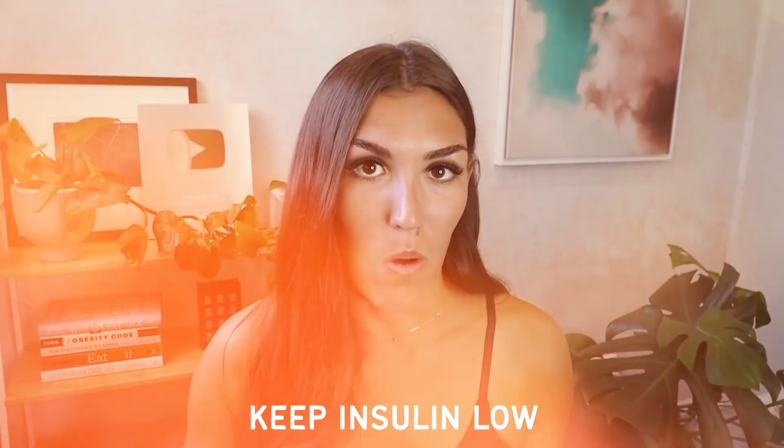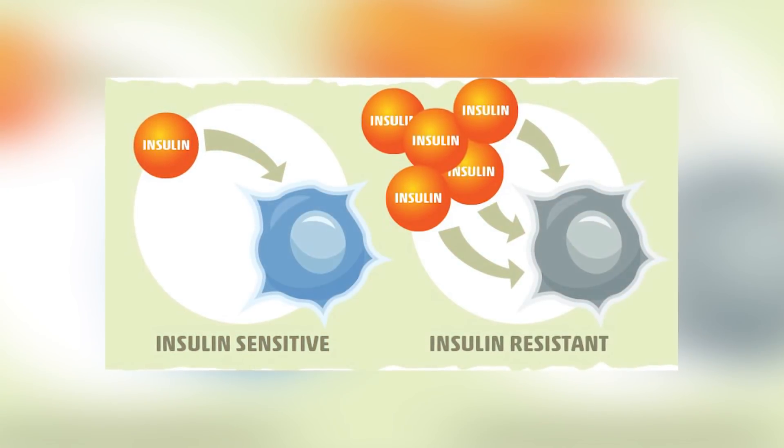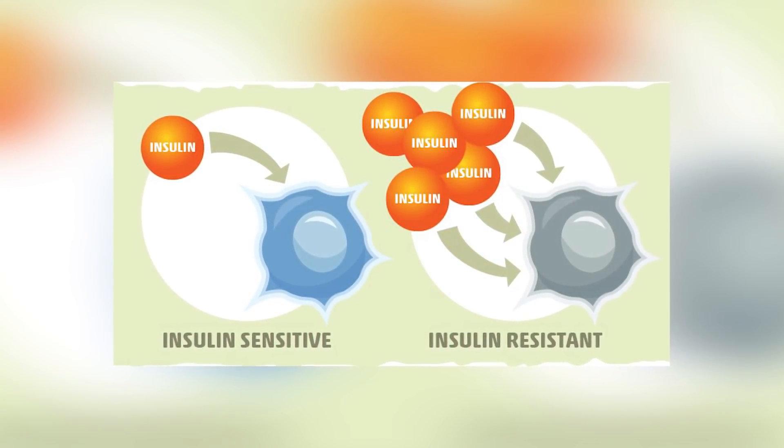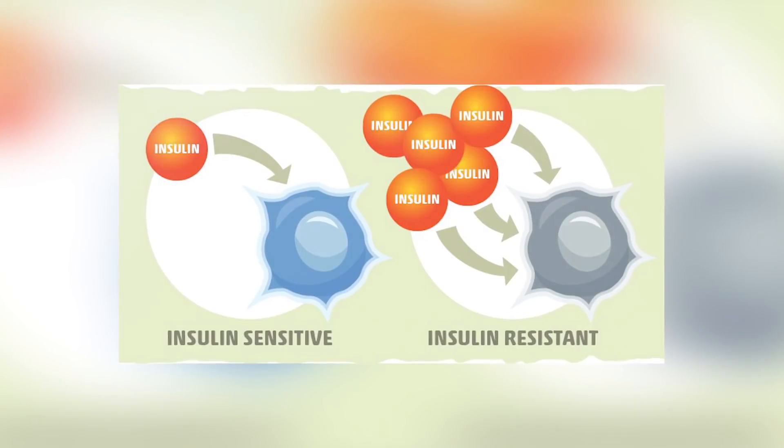So how can we use our understanding of insulin resistance to fight obesity and lose weight? The answer is pretty simple: the goal should be to keep insulin low. When insulin is kept low, our cells will start to become more sensitive to it again and we will also be able to burn fat more easily. The two main ways to keep insulin low are to eat foods that have a minimal impact on insulin, and to eat less frequently.